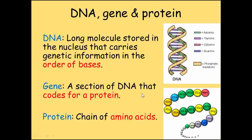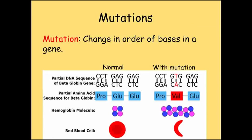A gene is a section of DNA that codes for a protein, and a protein is a chain of amino acids joined together in a particular order. DNA and proteins are both long molecules made up of a chain of smaller units. It's important to see this key similarity in their structure, as the order of amino acids in a protein is determined by the order of bases in the gene.